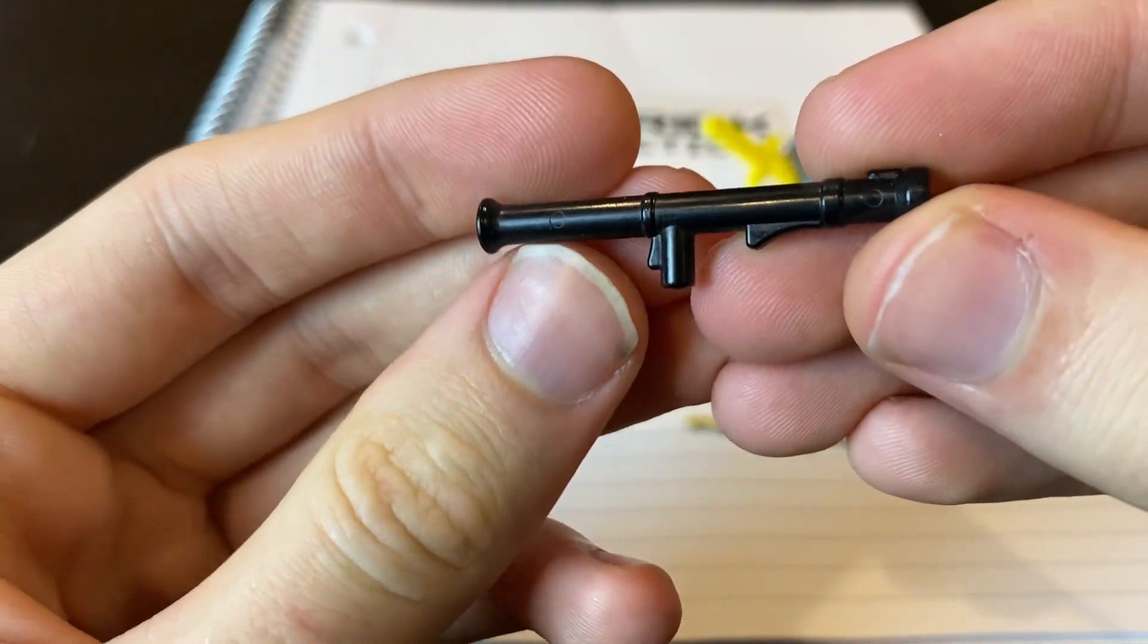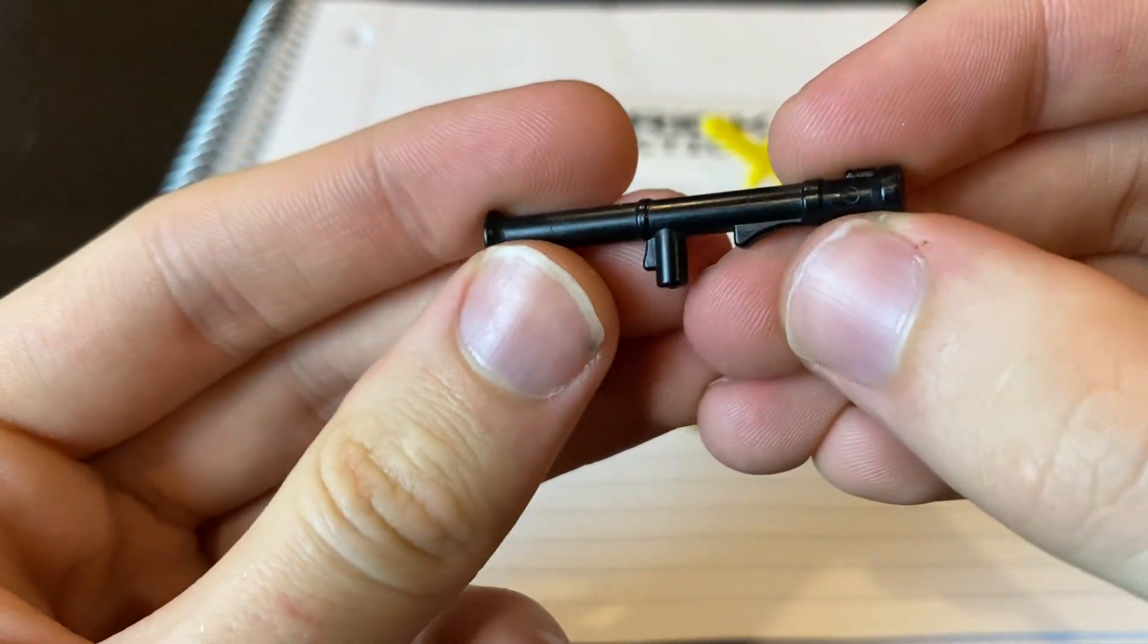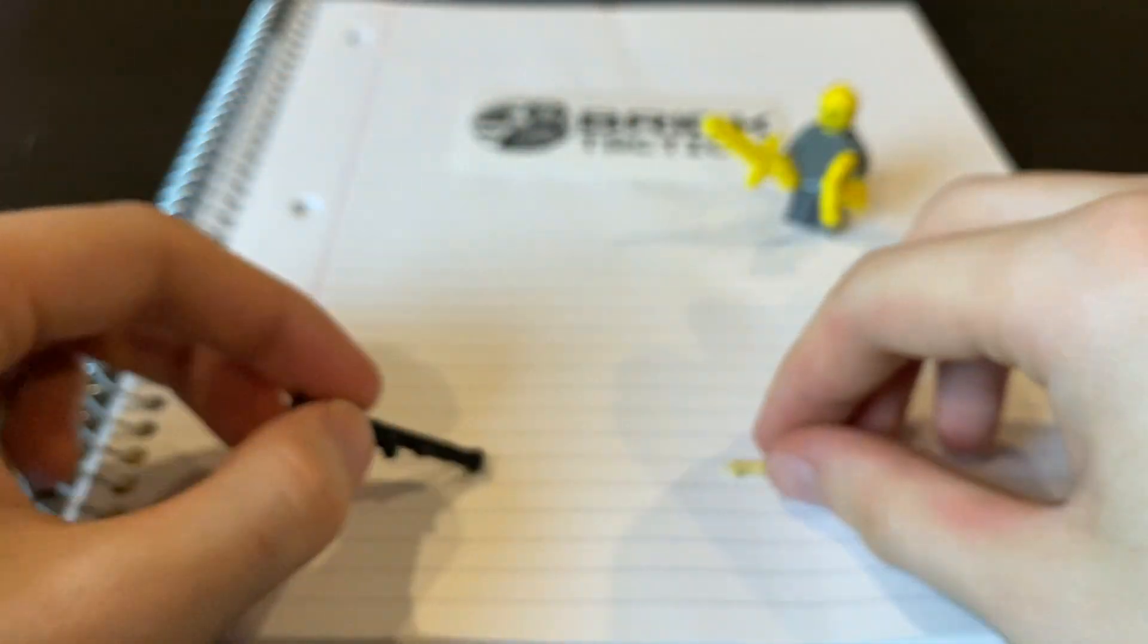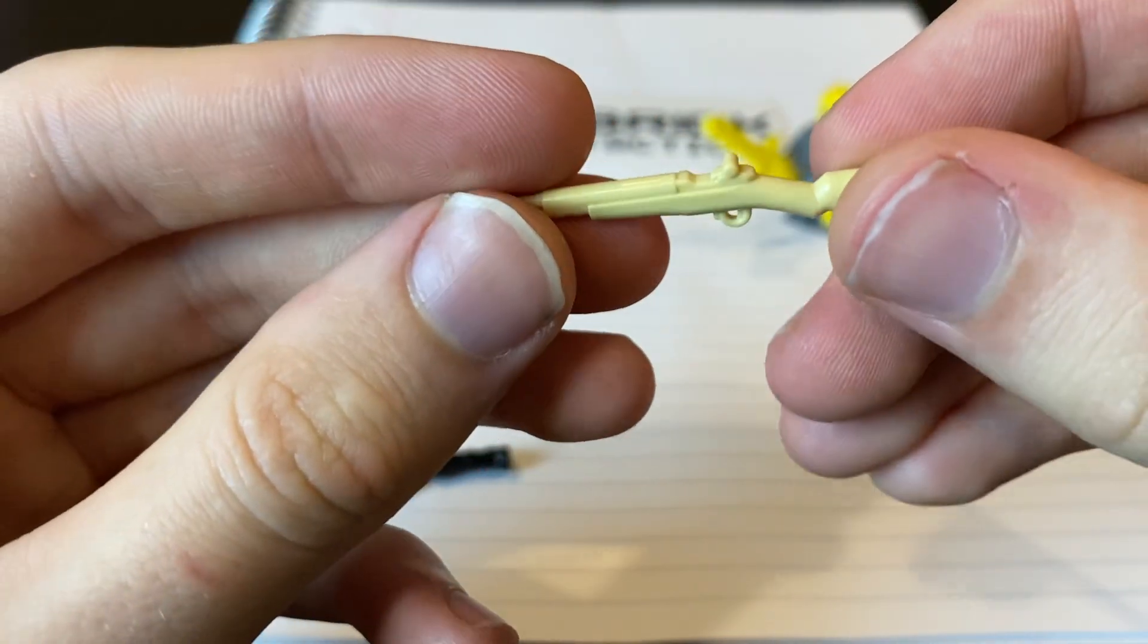There's no ejector pin marks. Whereas let's say, let's grab another third party accessory here. See those circles there and there. Those are the ejector pin marks. Whereas with mine, you don't see anything.